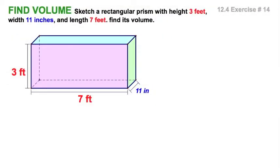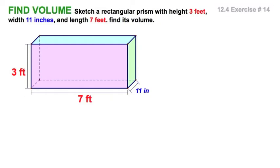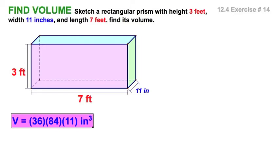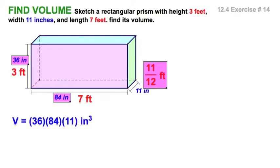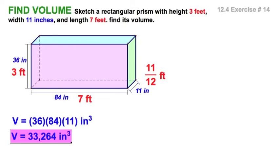Here we go with a pretty straightforward volume problem with a rectangular prism, where we have three dimensions. You know we could just multiply length times width times height. But we're throwing a little curve — we're given 11 inches along with our seven feet and three feet. I've color-coded them differently to make sure we notice the units. We'll call this the 'God bless America' problem, because only in America do we have such funny units. We can find the volume using all one unit — convert everything to inches, or convert to feet.